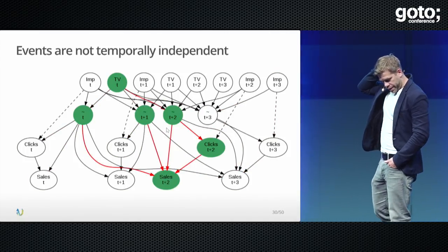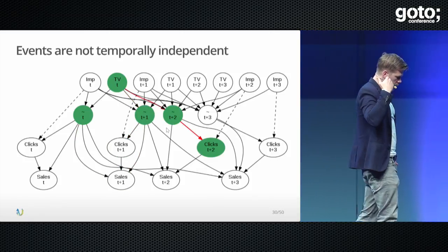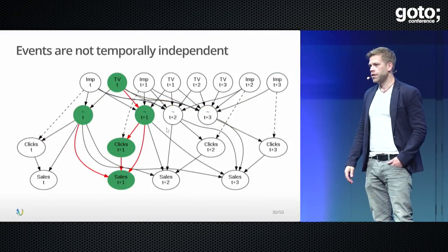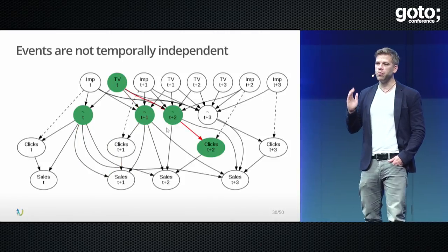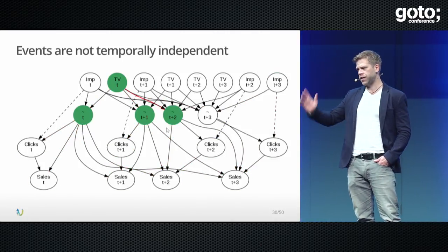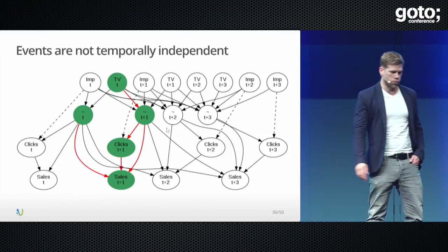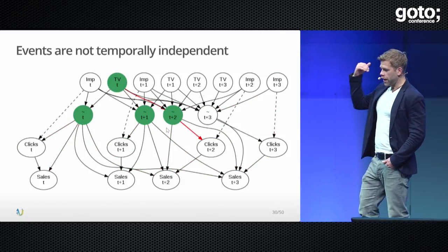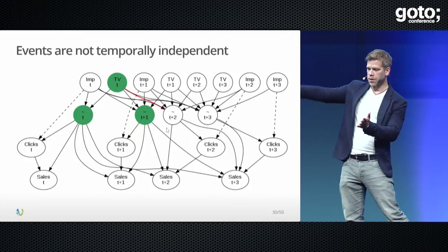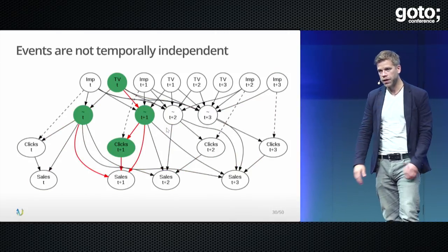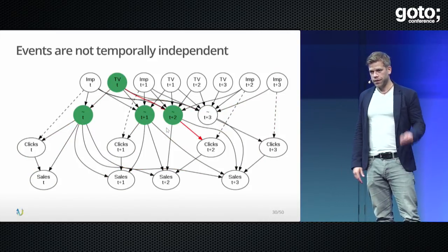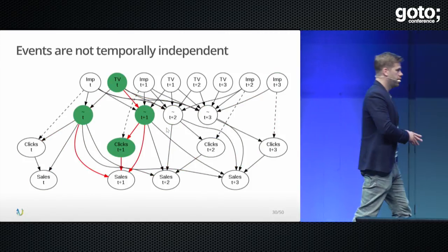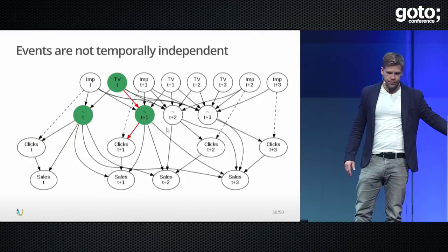Events are not temporally independent. Everything you do today, everything you perceive, is affected by what you saw yesterday. It's the same with data — data is not independent. You cannot assume two data points are independent; that is a wild assumption we've been allowed to make for far too long. In the domain I was working in, we were trying to solve how TV exposure affects purchasing behavior into the future. A TV commercial today might affect you to buy something far in the future — that's causal temporal dependency that needs to be accounted for.